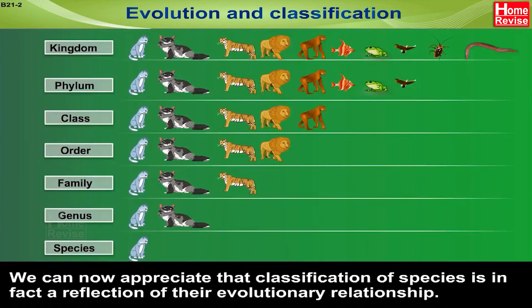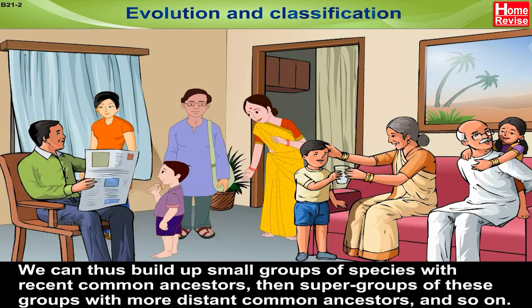We can now appreciate that classification of species is in fact a reflection of their evolutionary relationship. We can thus build up small groups of species with recent common ancestors, then super groups of these groups with more distant common ancestors and so on.